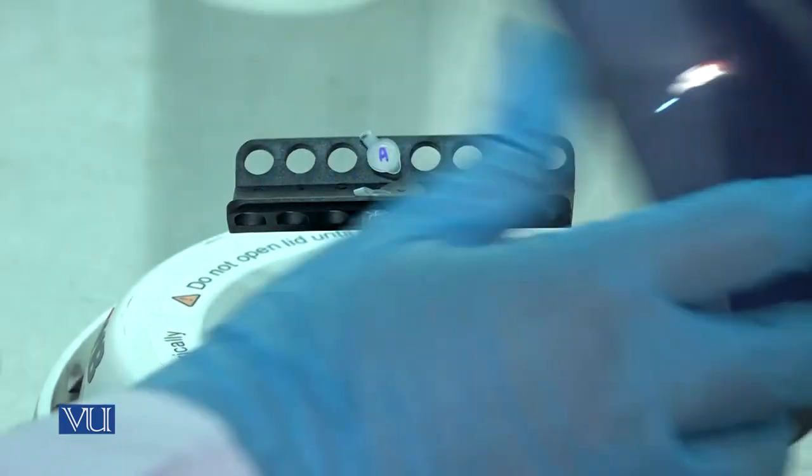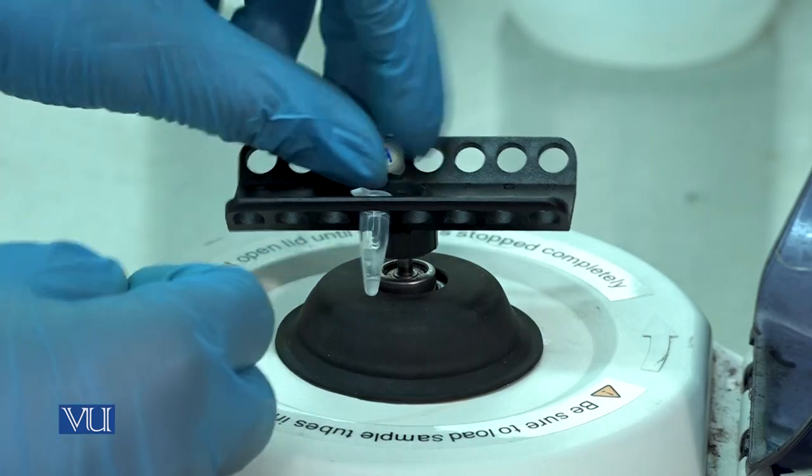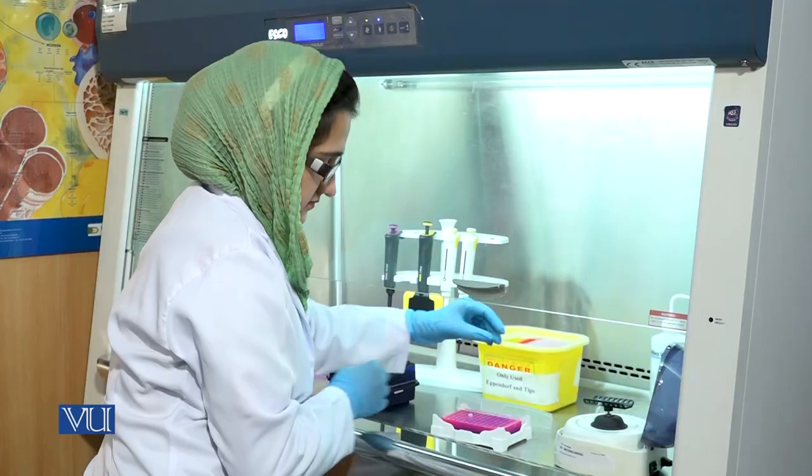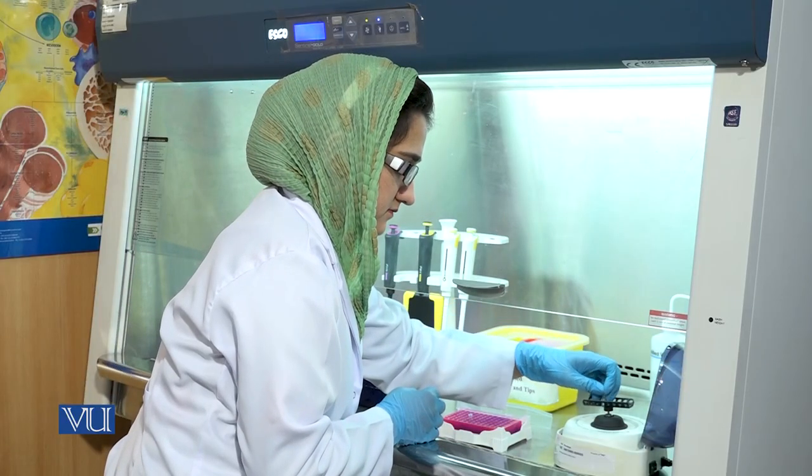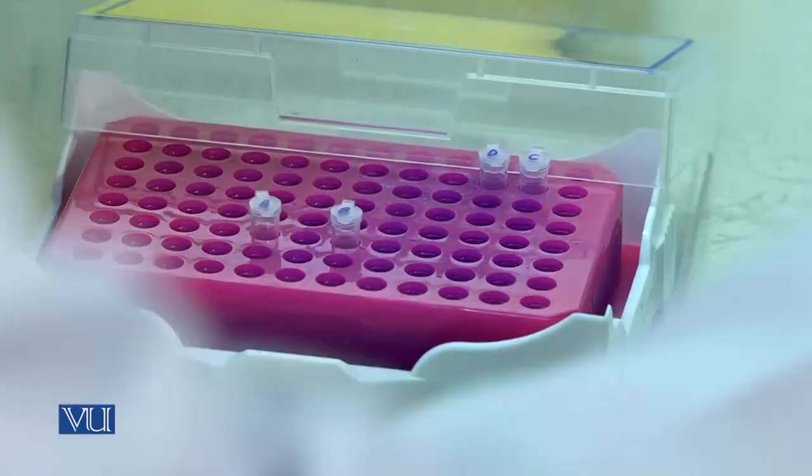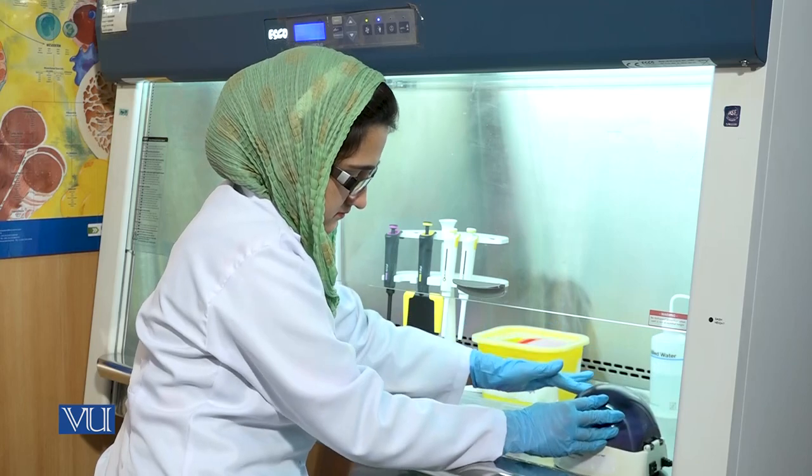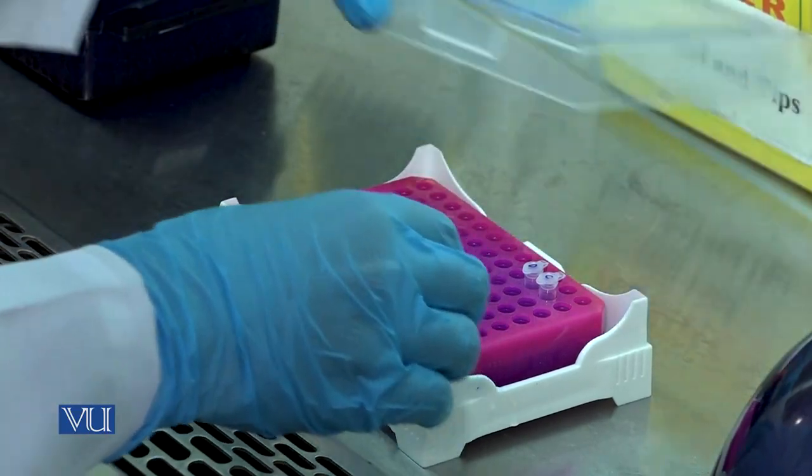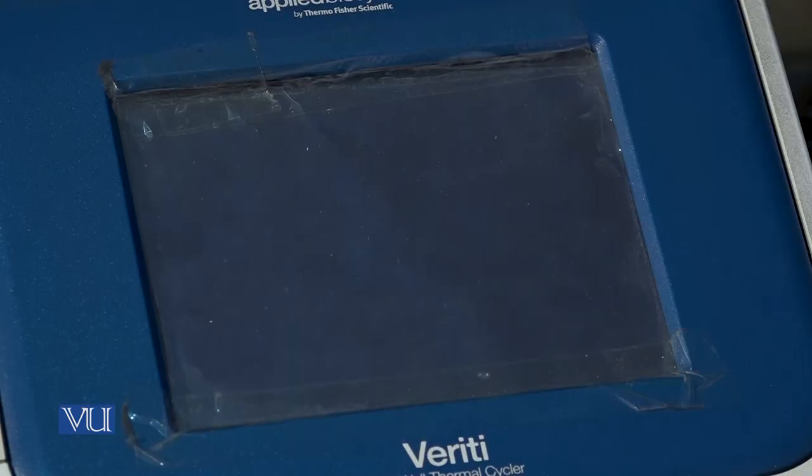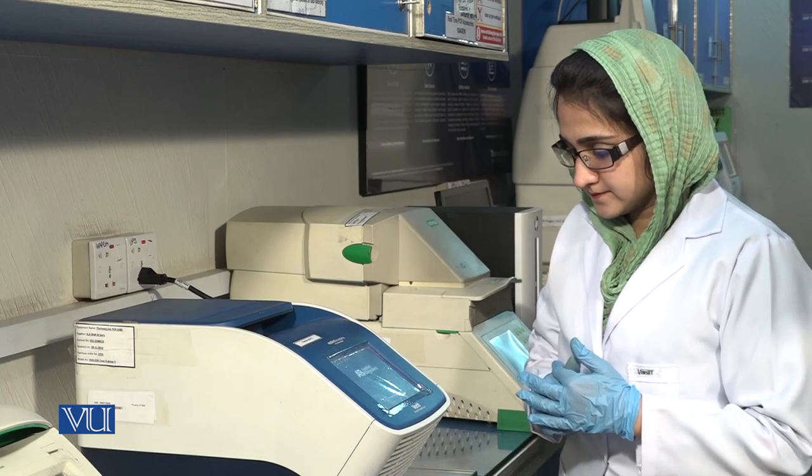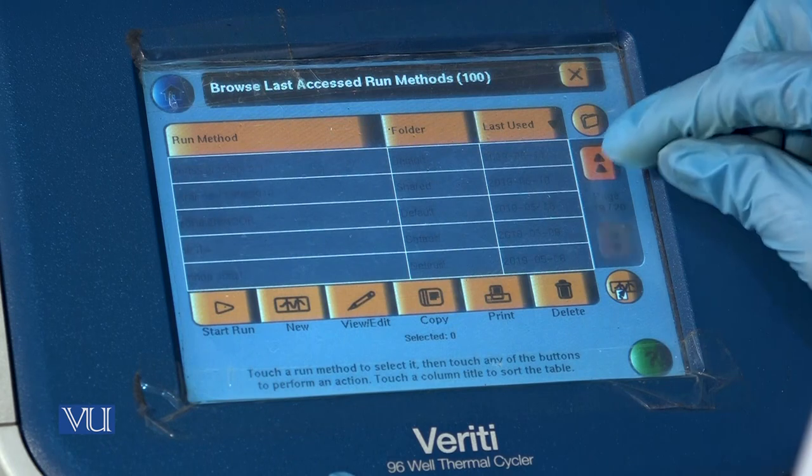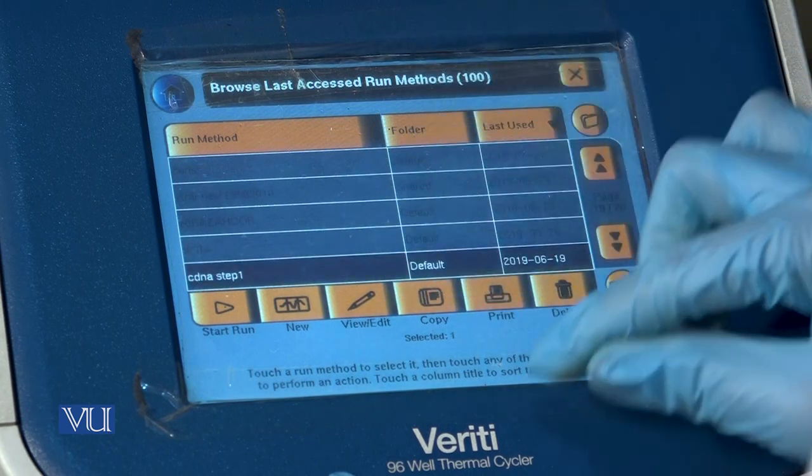After centrifugation, put the tubes on the cooling rack. Next step is incubation at 65 degrees Celsius for 5 minutes. Switch on the thermal cycler and set the required conditions in it.